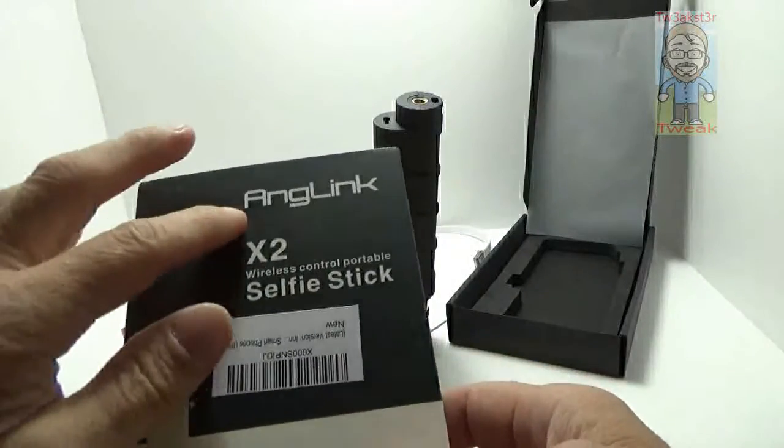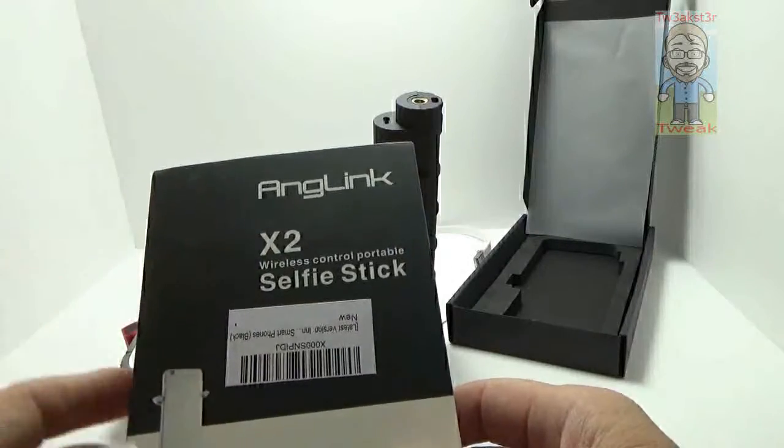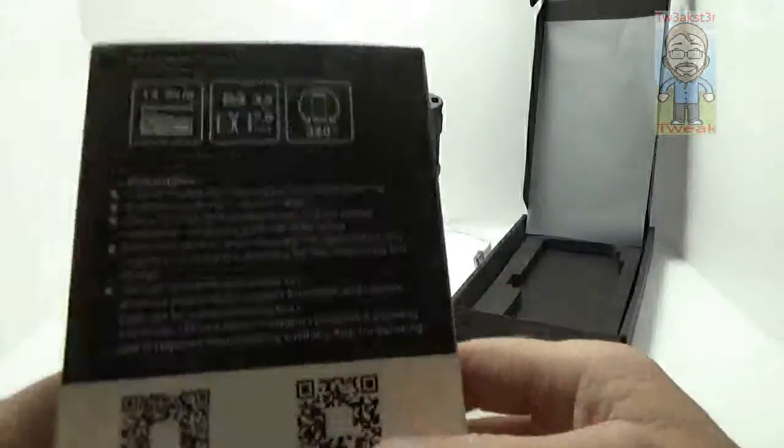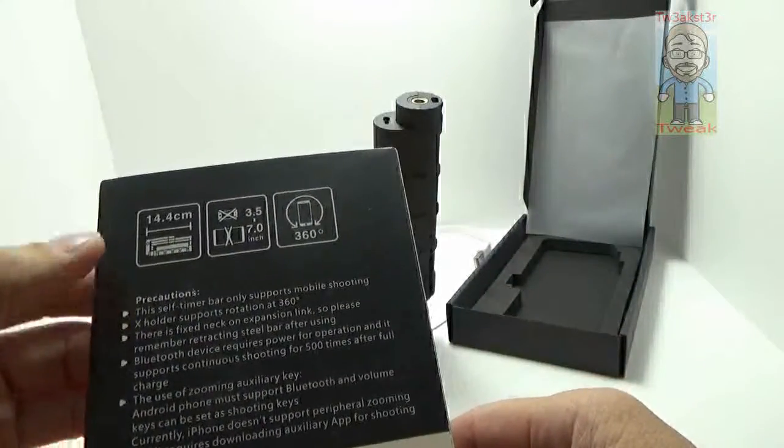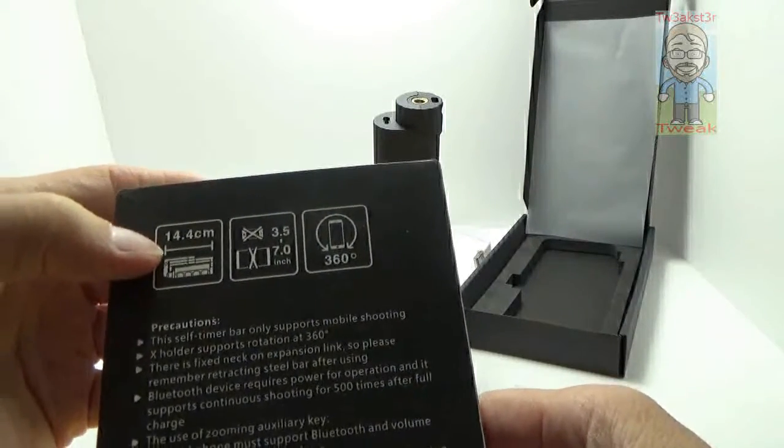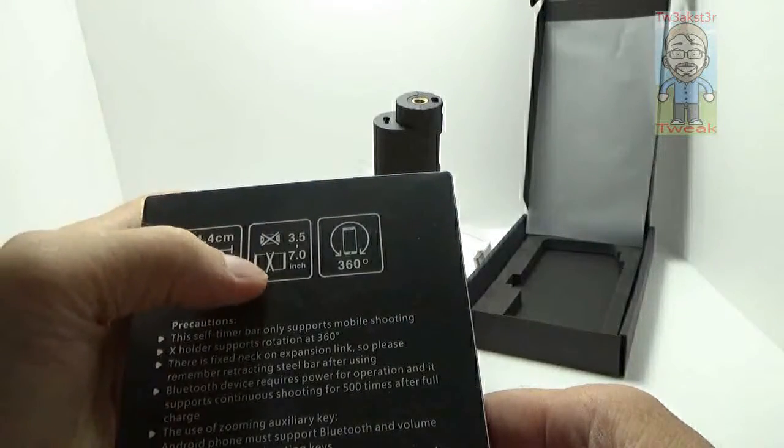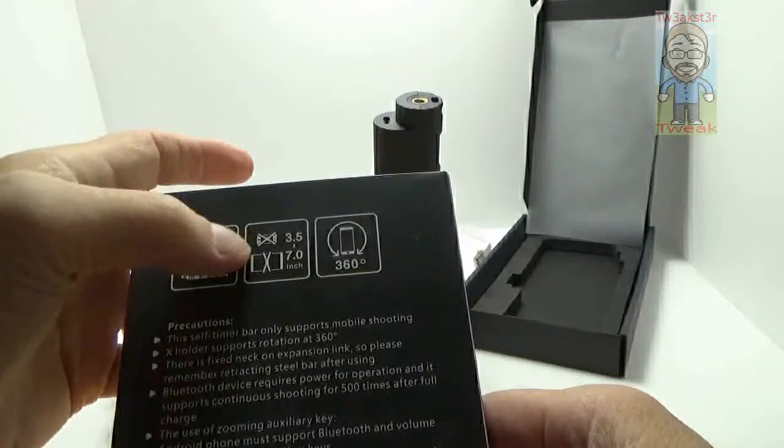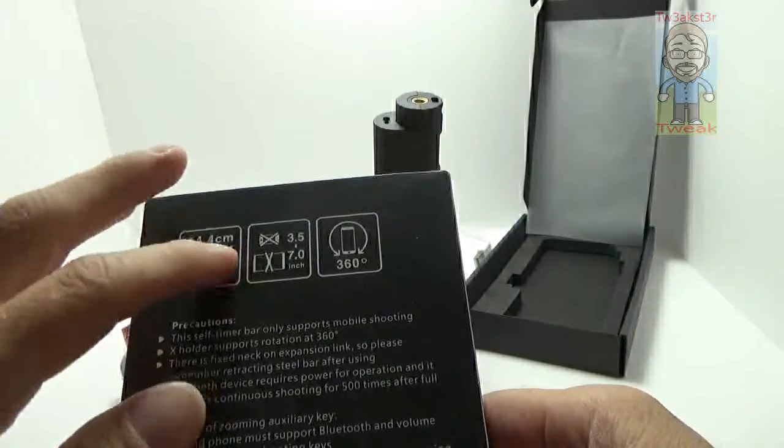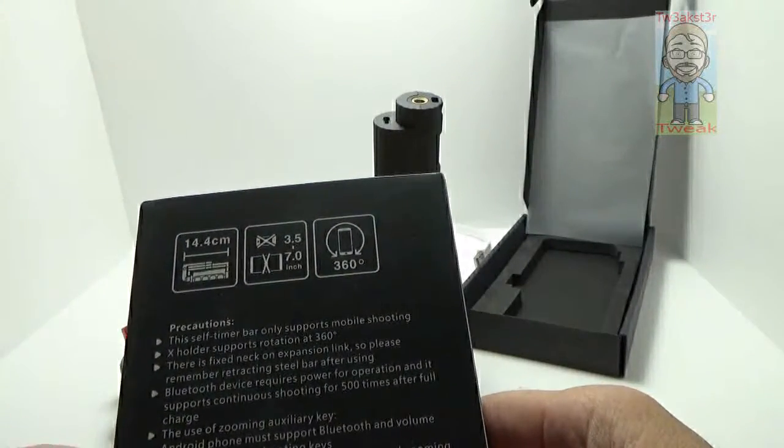It's an Ang Link - I thought it said Angry Link at first glance. X2 wireless control portable selfie stick. On the back there's some information showing the size when fully collapsed and the size phone it'll hold. Looks like it goes up to seven inch with 360 degree adjustment.